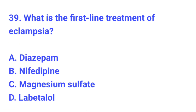Question number 39. What is the first line treatment of eclampsia? The correct answer is C, magnesium sulfate.